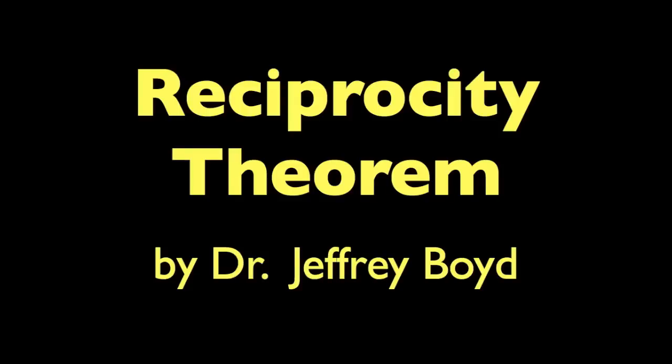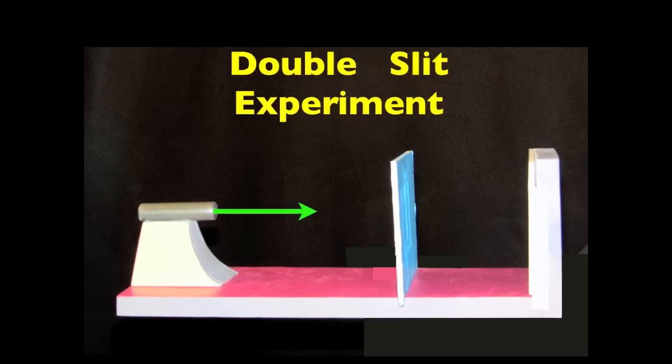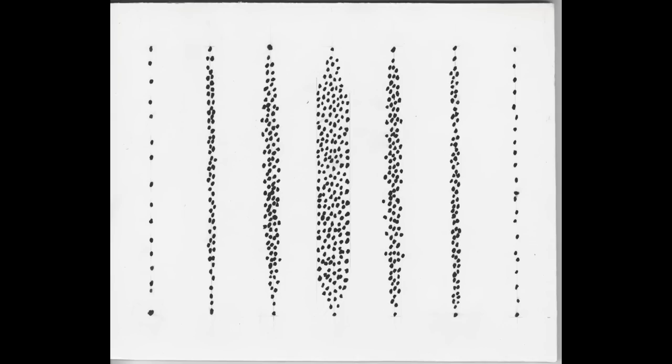Hello, I'm Jeff Boyd. In this video we're going to talk about the Reciprocity Theorem, which basically means in this double slit experiment that the waves could be going this way or that way and we would still have the same pattern on the target screen and the same mathematical equations. The interference is the soil out of which grows two things: the pattern on the target screen and the mathematics.